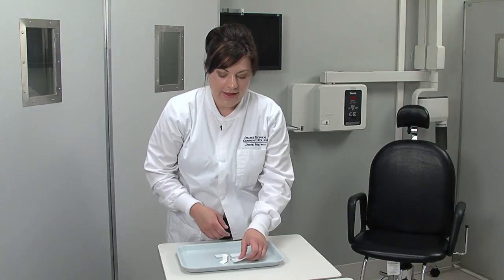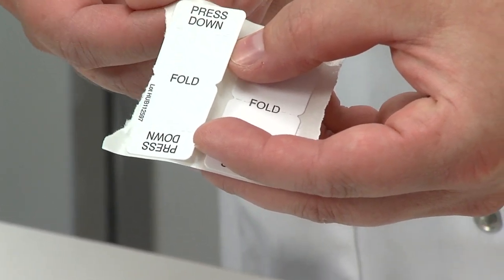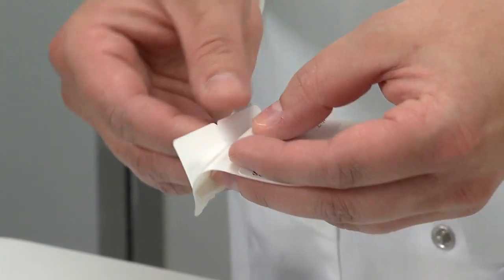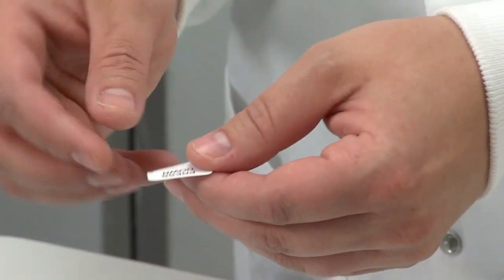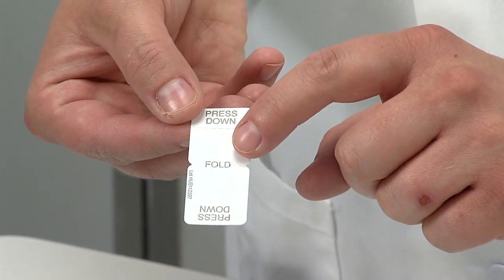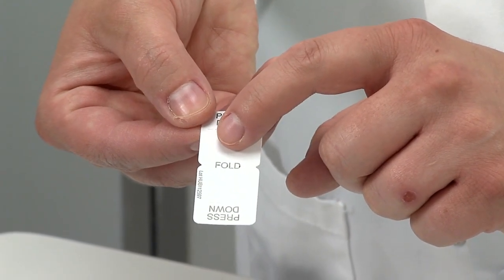The bite wing tab is a self-adhesive tab that comes on a piece of paper that you rip off. After removing the tab, you'll see that one side is adhesive, just like a sticker. You're going to fold the tab in half right here where it says fold.